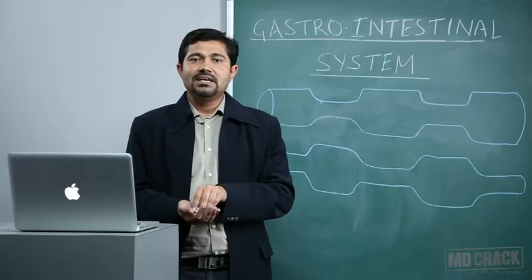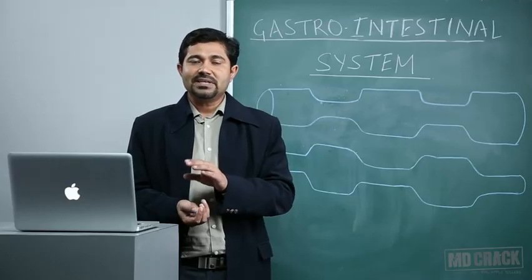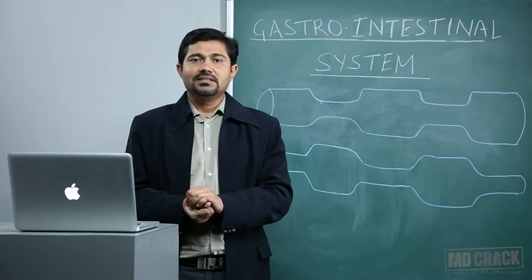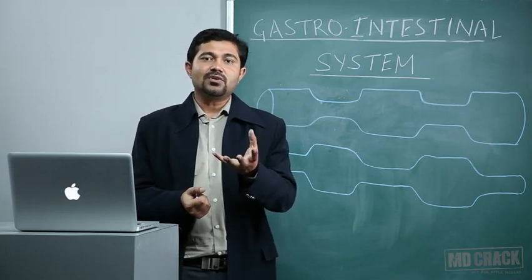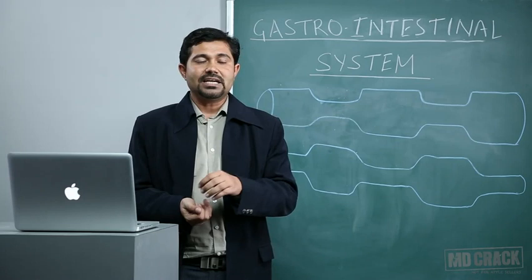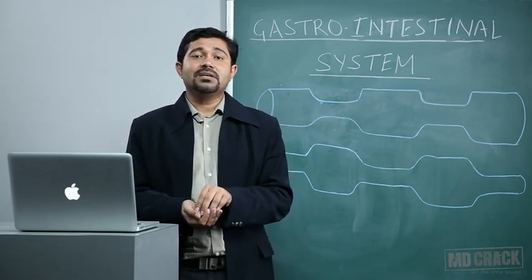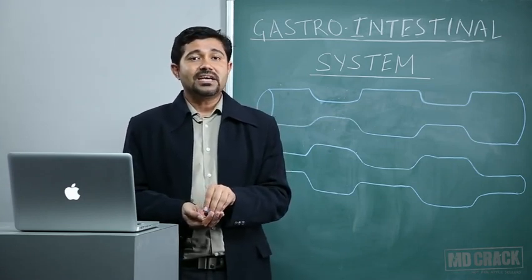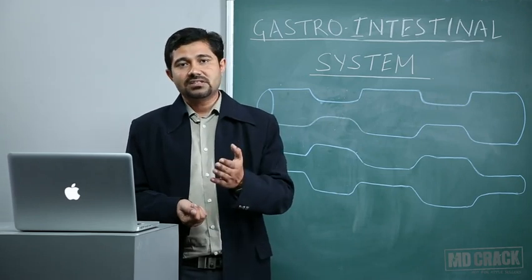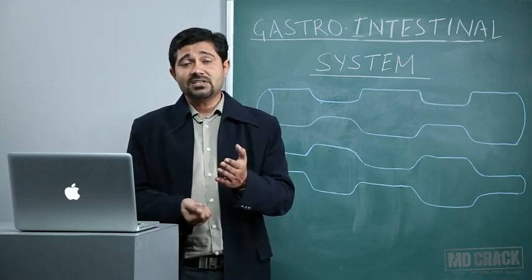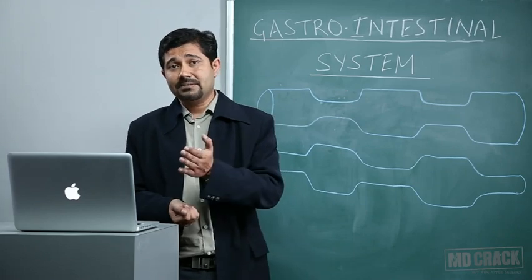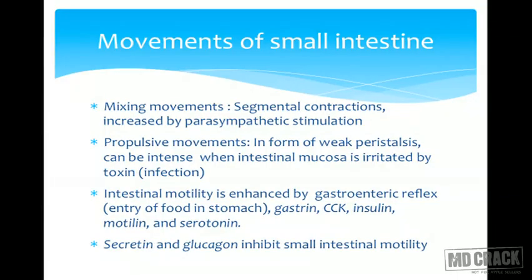The propulsive movements are normally weak peristaltic movements present in the intestine - they should be weak because sufficient digestion and absorption needs to take place. But sometimes, if the intestine is irritated with toxins, the peristalsis can become very fast and rapid, and then the person will have diarrhea.